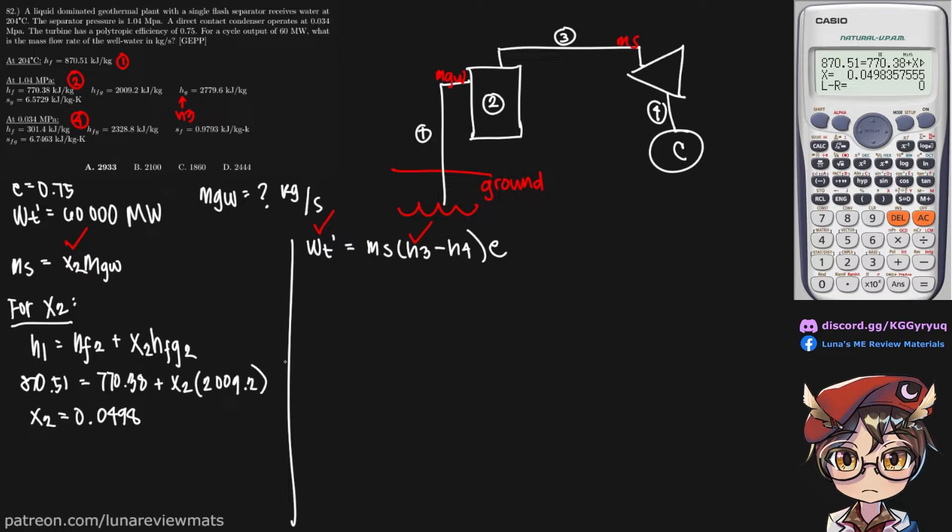So we have that already. We do not know our H sub 3. But we do know our polytropic efficiency. So we need to find H sub 4 first.